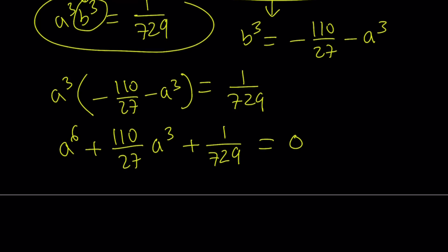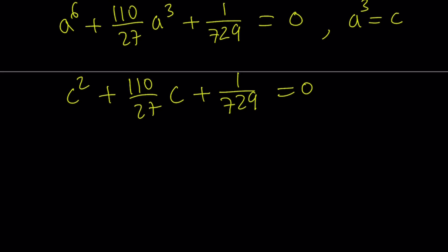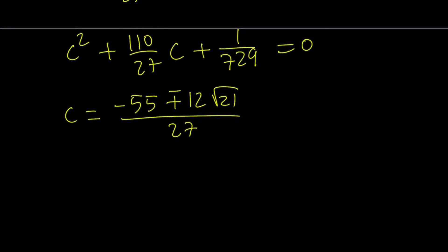Here, we're going to make the substitution a cubed equals c. I just want to use c. And allow me to make the joke. You see what I see? If you do the replacement, you get c squared plus 110 over 27c plus 1 over 729 equals 0. This is a quadratic, and we can easily solve it. I'll spare you the trouble again. But c becomes negative 55 plus minus 12 times the square root of 21 divided by 27. You can multiply both sides by 729 in the quadratic and get a nicer solution as well.